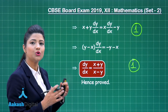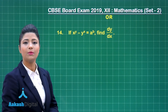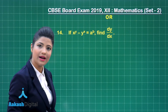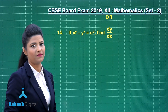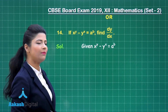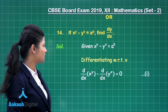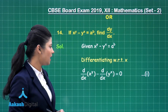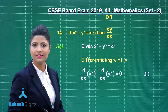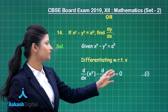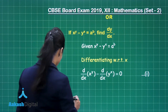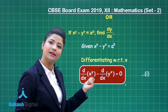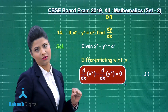Now let us cover the second choice of this question. Here we are finding dy/dx where the equation is x raised to the power y minus y raised to the power x equal to a raised to the power b. Differentiating both sides with respect to x, we get differentiation of x raised to the power y minus differentiation of y raised to the power x equal to differentiation of the constant term, which is 0. This is equation number 1. To obtain the final dy/dx we need the differentiation of x^y and y^x separately.